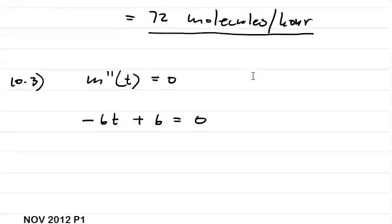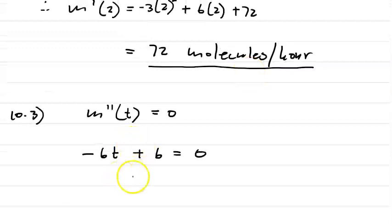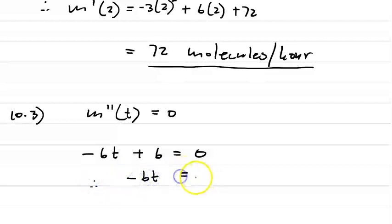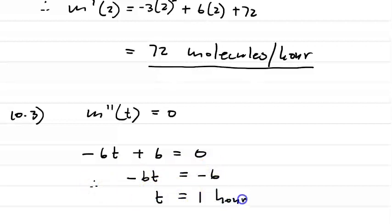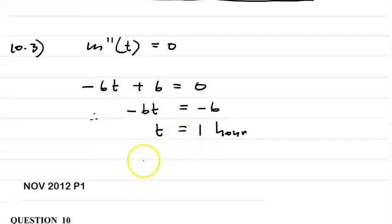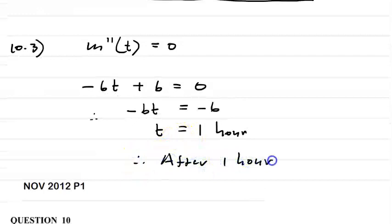Solving -6T + 6 = 0 gives -6T = -6, therefore T = 1. So the rate is at a maximum after one hour.